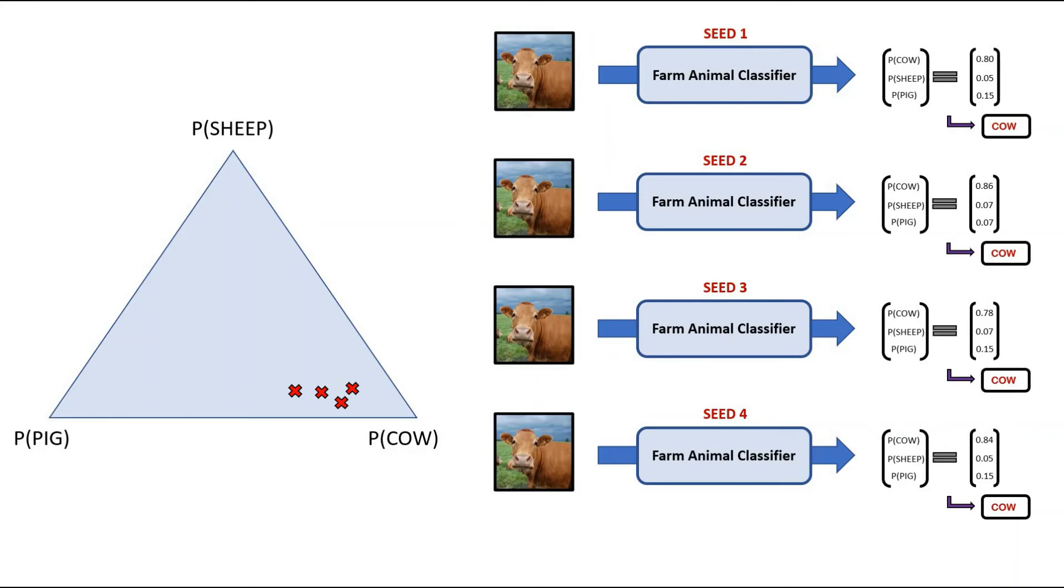This collection of trained models is called an ensemble, and each of these individual models are called ensemble members. We can continue to grow the ensemble and plot the output probability distributions onto the simplex. We are now in a position to deduce the model and data uncertainty.